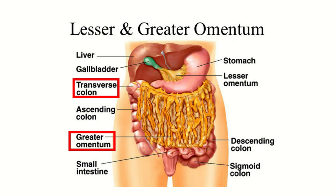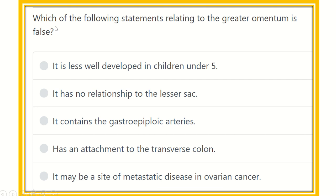Hello everyone, welcome to another question and answer session. The question is: which of the following statements relating to the greater omentum is false? The options are: it is less well developed in children under five; it has no relationship to the lesser sac; it contains the gastroepiploic arteries; it has an attachment to the transverse colon; it may be a site of metastatic disease in ovarian cancer.